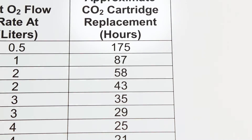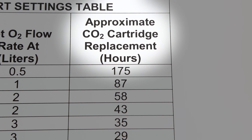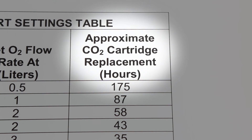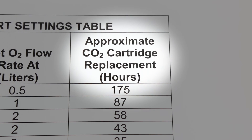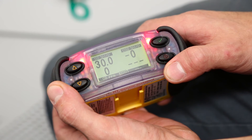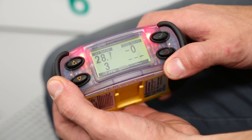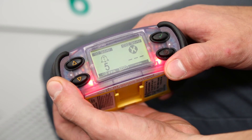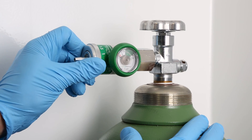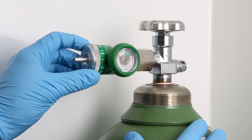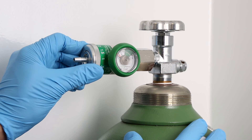Refer to the life support settings table for approximate Marcosorb CO2 cartridge replacement duration. Excess or insufficient oxygen level in the safe haven: if oxygen level is less than 18.5% or greater than 23%, adjust the oxygen regulator up or down one notch accordingly.